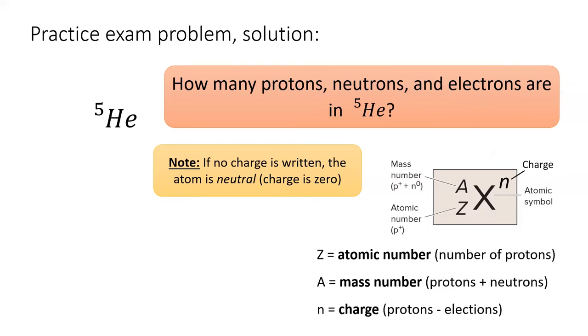Well, in this question, the easiest one to figure out is the atomic number or number of protons. Even though it's not written, we always know that helium has two protons or else it's not helium.